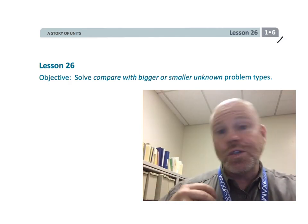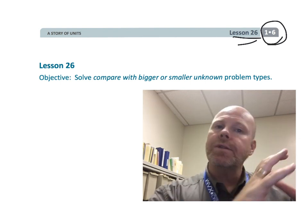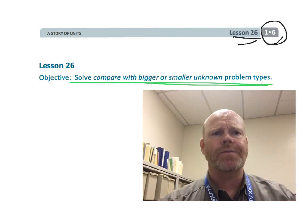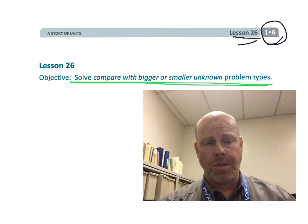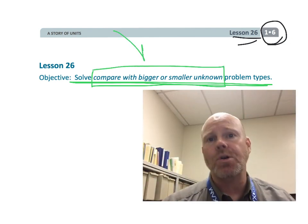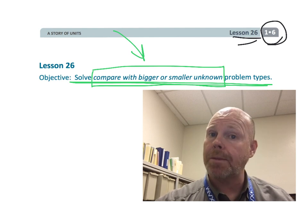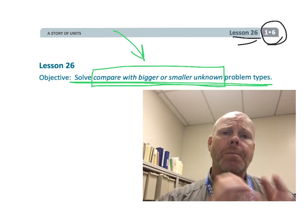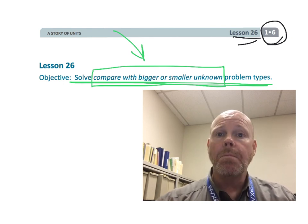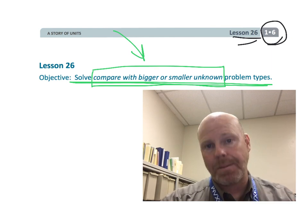All right, this is first grade, module 6, lesson 26. And in this lesson, the specific objective says to solve compare with bigger or smaller unknown problem types. So this is one of the kinds of addition and subtraction problems listed in the glossary of the Common Core Math Standards. But the real focus of this lesson is helping our students learn how to model their thinking of the word problem using tape diagrams.